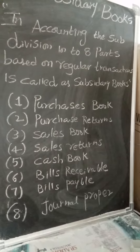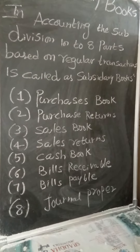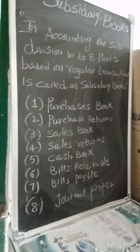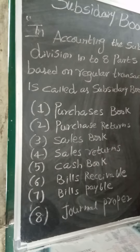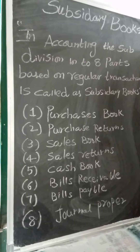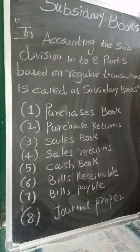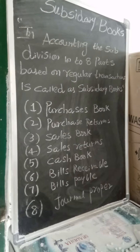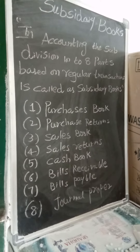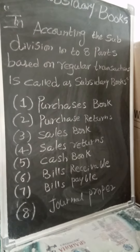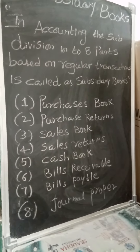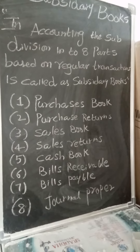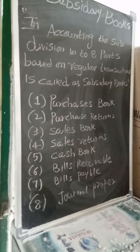Purchase returns book is used to record the goods which are returned to the suppliers with the help of a debit note. Sales book records the credit sale of goods. Keep in mind: sale of assets and cash sales cannot be recorded here. Similarly, sales returns book is used to record sales returns with the help of a credit note.